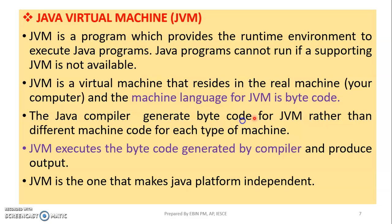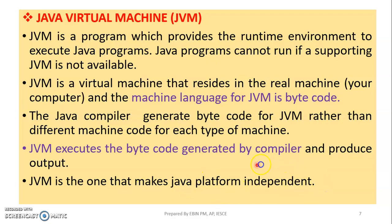The Java compiler produces bytecode. This bytecode is then processed by the JVM — the Java Virtual Machine — which converts it into machine language. JVM executes the bytecode generated by the compiler and produces the output. JVM is what makes Java platform independent, meaning it doesn't depend on any particular computer or platform.